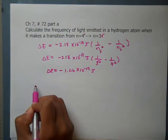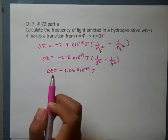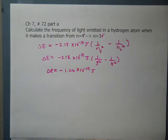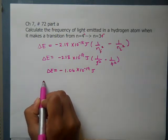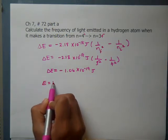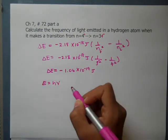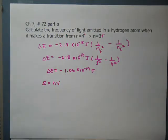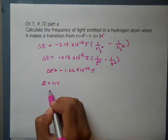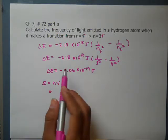We know there's a formula for frequency related to energy: E equals h times frequency. Remember this v is really a Greek symbol nu, and it represents frequency.